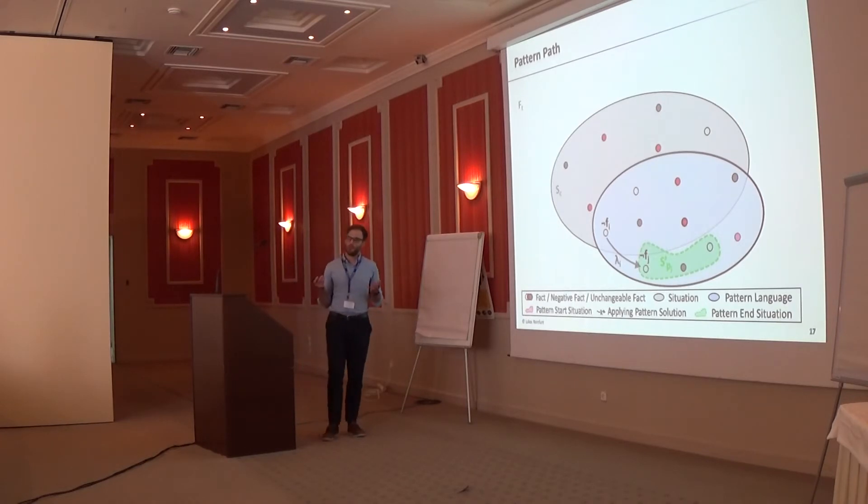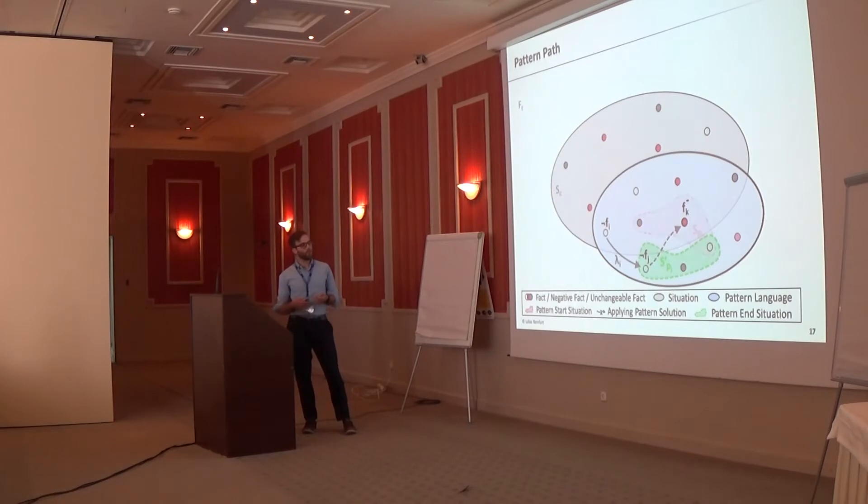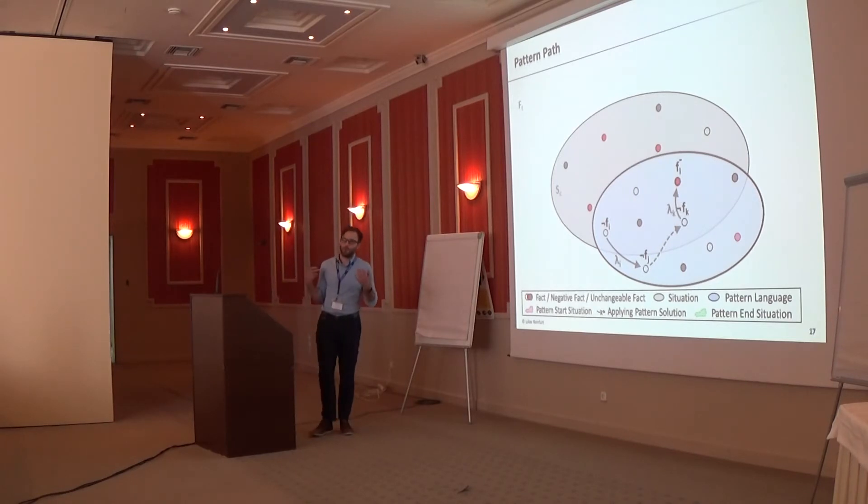In this case, we might not introduce new side effects, but the pattern itself might link to another pattern to solve another problem. So we could follow this link, then we could apply this pattern, and so on. What we see here is a pattern path through the pattern language that we can follow to solve our problems. At the end of this path, we end up in a situation where, in some cases, all of our problems, but maybe not all of our problems are solved. And we want to find now the first pattern in such a pattern path that brings us the closest to the situation where all of the problems are solved.